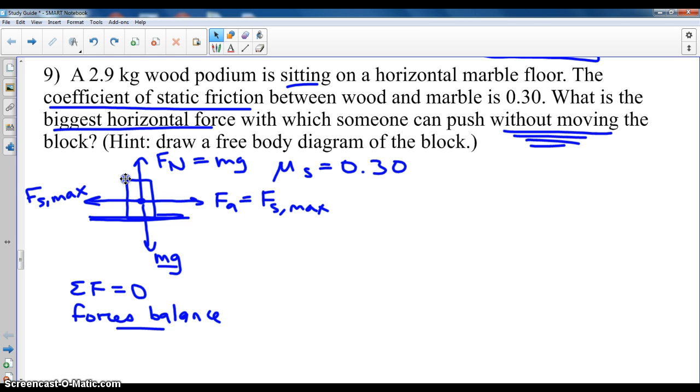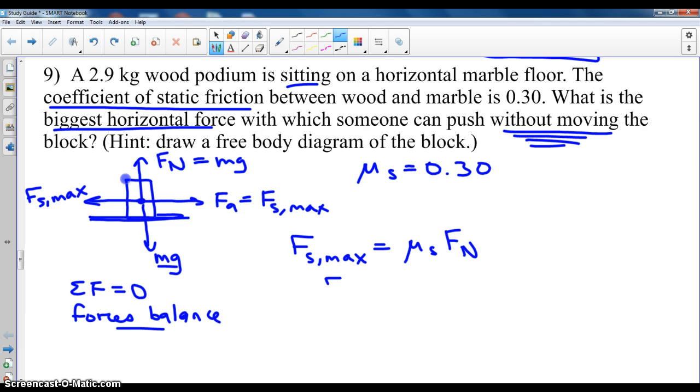When we are given mu, you immediately start thinking of the mu equation. We use mu S, F_s max, because we're dealing with static friction in this problem. F_s max balances, we said, F_A. They're equal. F_N, we said, balances MG.